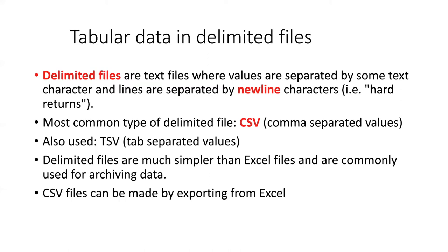One reason why delimited files are popular is they're much simpler than Excel files. Excel files store a lot of extra data about things like row colors and the last cell you clicked on. Those sorts of details are not stored in CSV files, and because CSV files are so much simpler and do not depend on any proprietary software to open, they are very commonly used for archiving data.